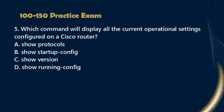Question 5: Which command will display all the current operational settings configured on a Cisco router? a. Show protocols, b. Show startup-config, c. Show version, d. Show running-config.